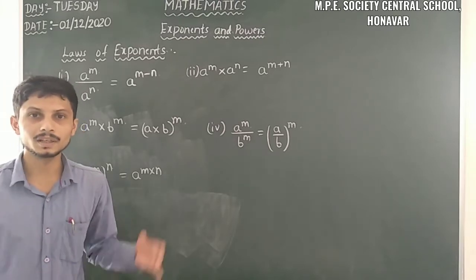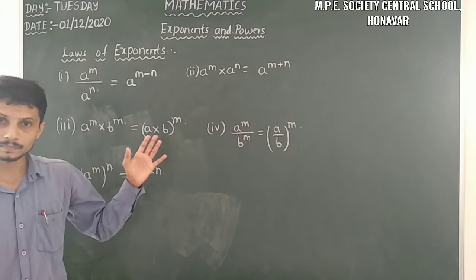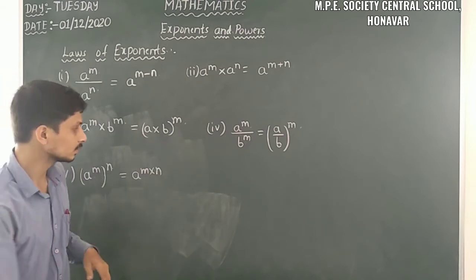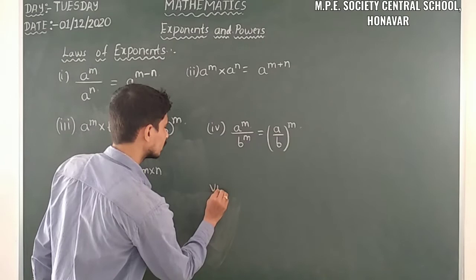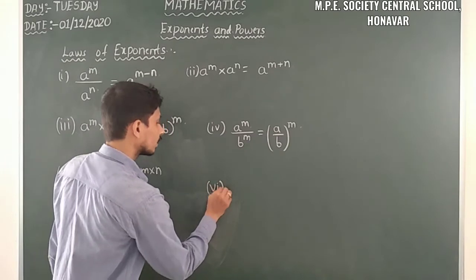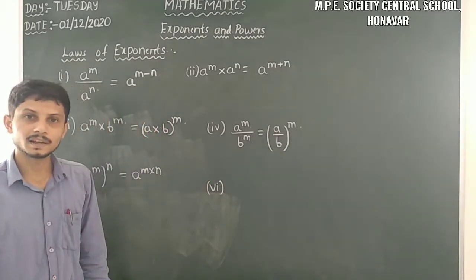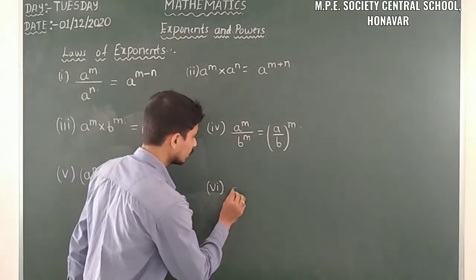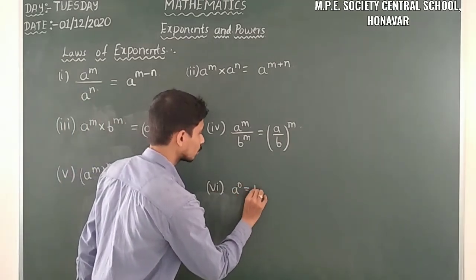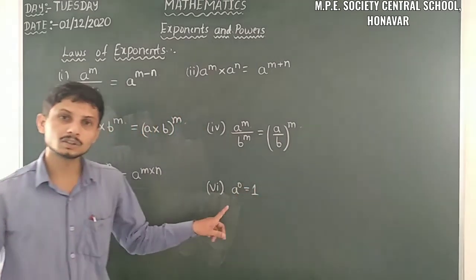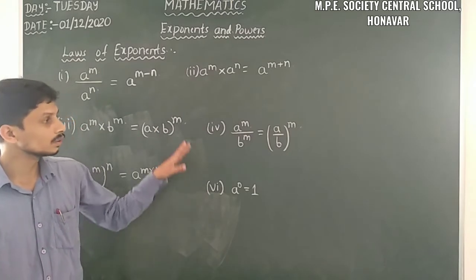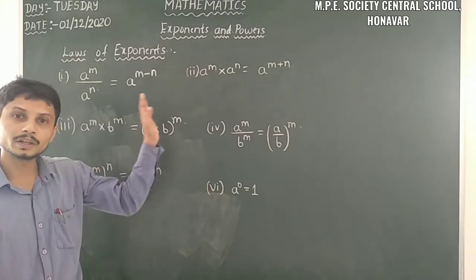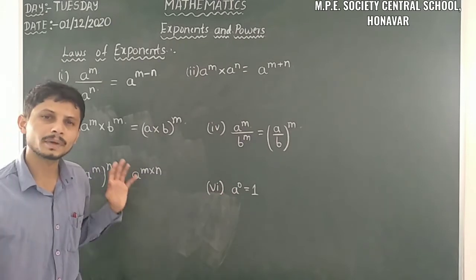The last law is: when a base has an exponent of 0, then a raised to 0 is equal to 1. So these are the six laws of exponents. Using these six laws, there are many examples to solve.